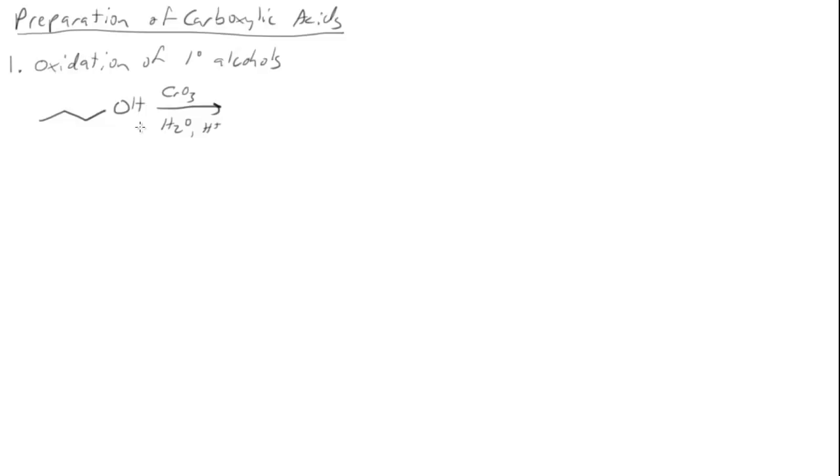So what are some methods that we use to form carboxylic acids? The first one we'll look at is oxidation of primary alcohols. Remember this back in the oxidations and reductions chapter. We do a Jones oxidation, which is chromium trioxide with acid.